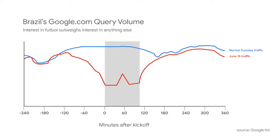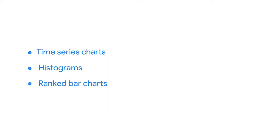Correlation charts that do show causation can be effective. For example, this correlation chart has one line of data showing the average traffic for Google searches on Tuesdays in Brazil, and another line for a specific date of search traffic, June 15th. The data is automatically correlated because both lines are representing the same basic information. But the chart also shows one big difference: when a football match began on June 15th, the search traffic showed a significant drop. This implies causation — football is a very popular and important sport for Brazilians, and the data in this chart verifies that. We've now talked about time series charts, histograms, ranked bar charts, and correlation charts. Each of these charts can visualize a different type of analysis, and your business objective and audience will help figure out which to choose.